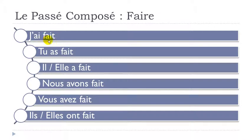But then we'll repeat it one more time. J'ai fait — remember, the final T is not pronounced. J'ai fait. Tu as fait. Il a fait. Elle a fait.